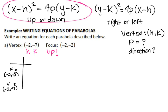I have my h and my k. Now the last thing I need to do is figure out what my p is. p is the distance from your vertex to your focus. I am going from negative 2, negative 7 to negative 2, negative 2, so I'm traveling this distance. My y coordinates are the ones that are changing — going from negative 7 to negative 2 means I am moving 5 units. So p is going to equal 5.